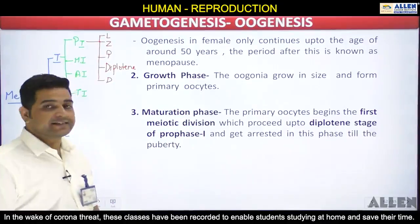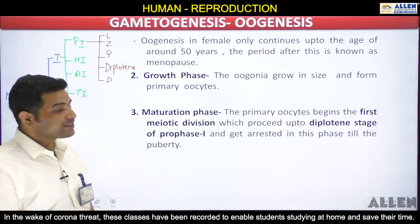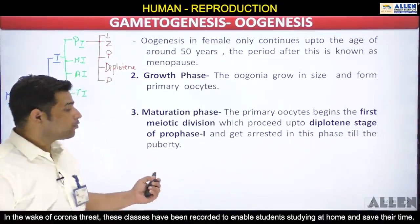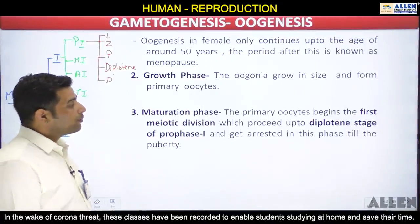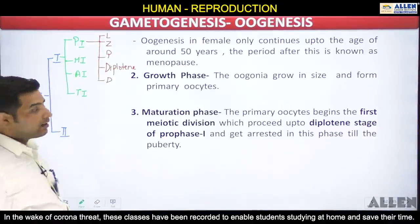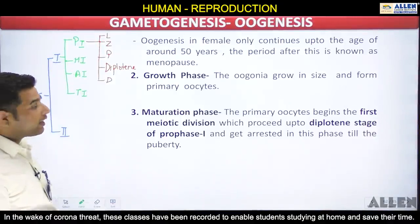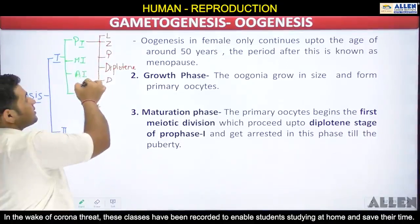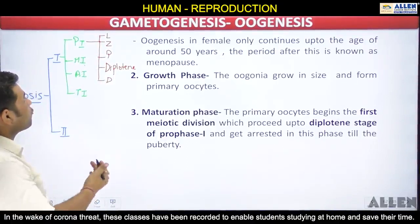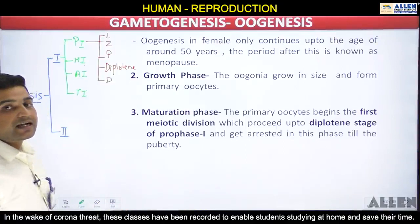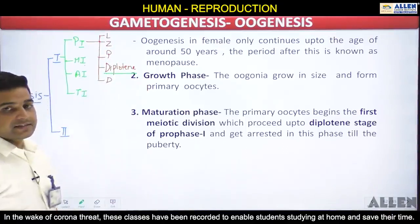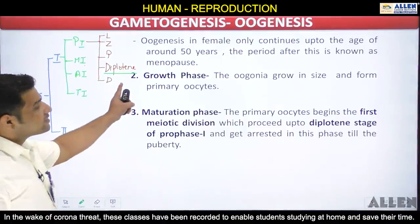During the maturation phase, the primary oocyte begins the first meiotic division, which proceeds up to the diplotene stage of prophase I and gets arrested in this phase until puberty. In meiosis I, the stages are prophase I, metaphase I, anaphase I, and telophase I. Prophase I is the longest phase and is subdivided into leptotene, zygotene, pachytene, diplotene, and diakinesis. So the primary oocyte proceeds through leptotene, zygotene, pachytene, and arrests at the diplotene stage.